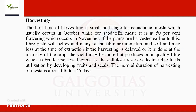The best time of harvesting is the small bud stage for Hibiscus cannabinus, which usually occurs in October, while for Hibiscus sabdariffa mesta it is at 50 percent flowering, which occurs in November. If plants are harvested earlier, fiber yield will be low and the fiber will be immature and soft. If harvesting is delayed until full maturity, yield may be more but it produces poor quality fiber which is brittle and less flexible, as cellulose reserves decline due to utilization by developing fruits and seeds.